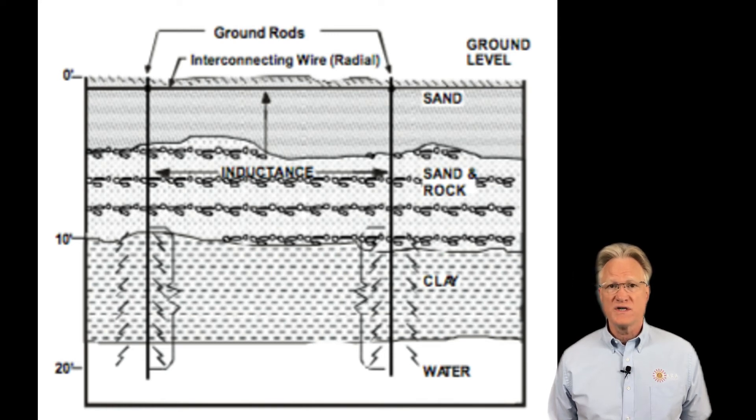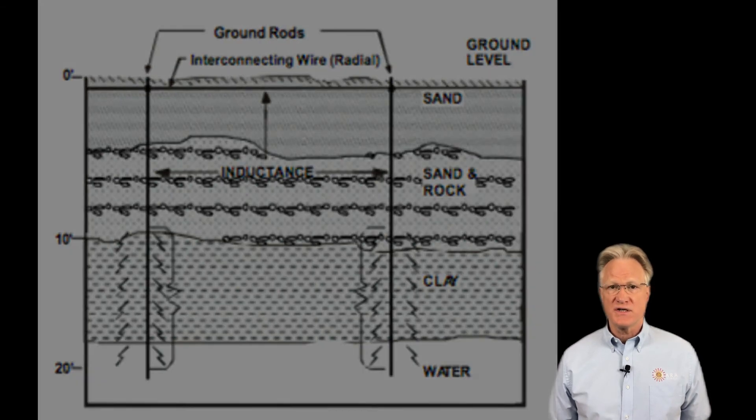Remember we want low resistance and low inductance. If we assume zero volts at the water table level—in this picture it's 15 feet down—then from the top of the soil down to the water table, the earth is a very poor conductor. Treating the soil is only half the battle. It only reduces the resistance.